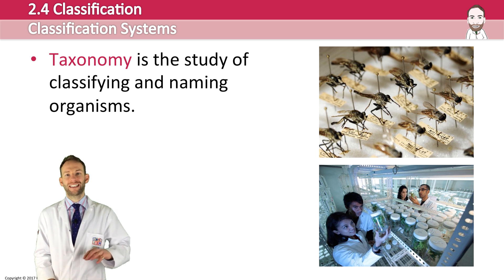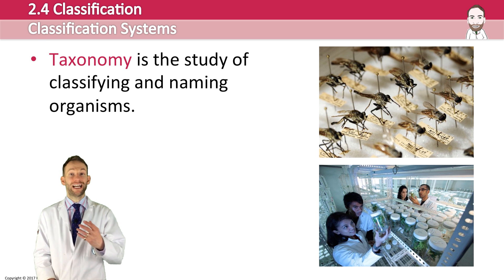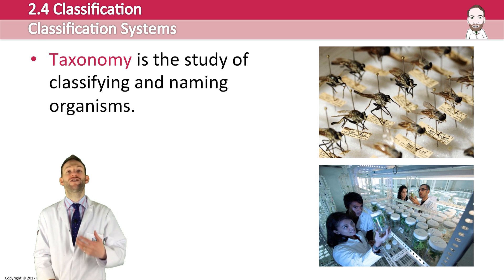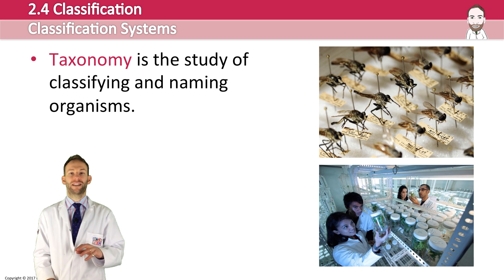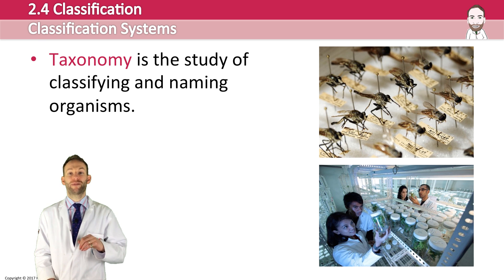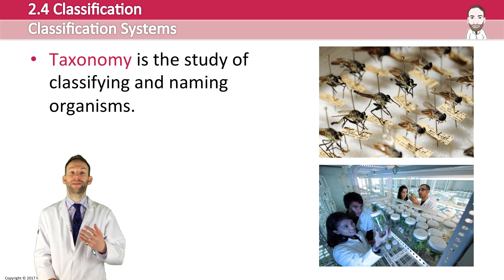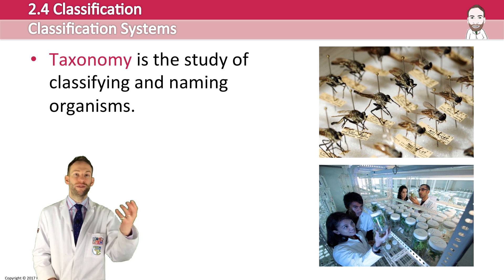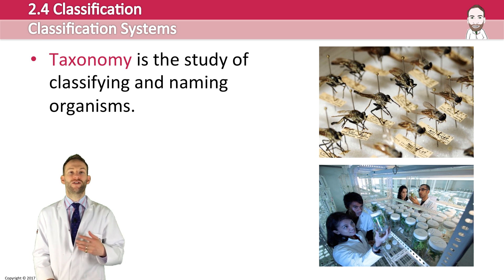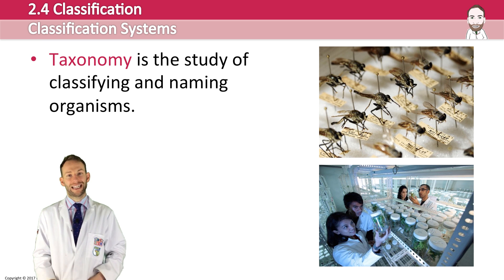Taxonomy is really important in science. There has to be an international standard for research and communication, and it helps to understand interrelationships between organisms. It's really helpful for applied biology — things like conservation and agriculture. A good taxonomy system allows scientists to make predictions about organisms based on their classification.